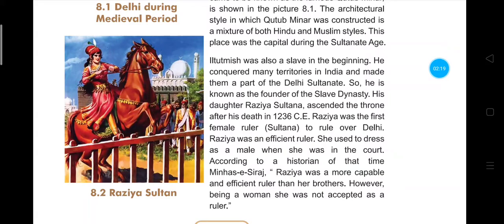About the slave dynasty, the rulers never used 'Shah' before their names. They were owned by their owners — for example, Kutubdin Ebak was the slave of Shahbuddin Ghori. In slave dynasties, those who are slaves are more loyal than even one's own children. Loyalty and faith to the owner is paramount.